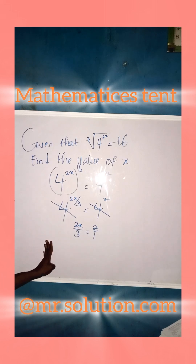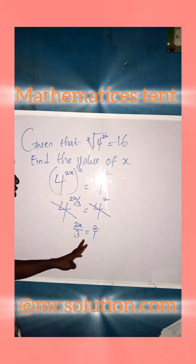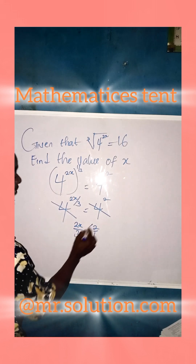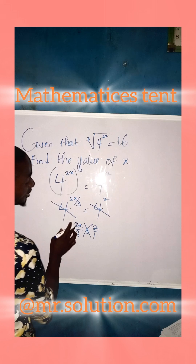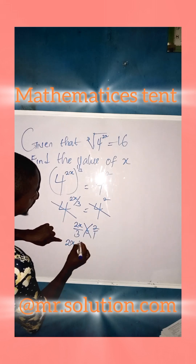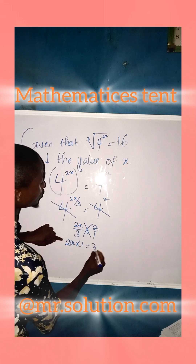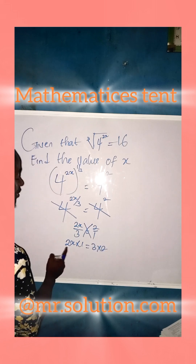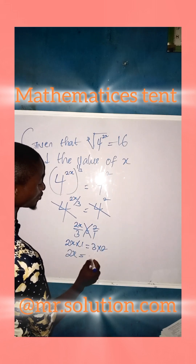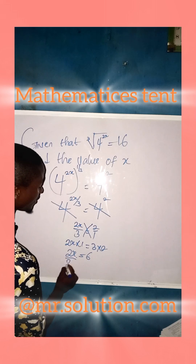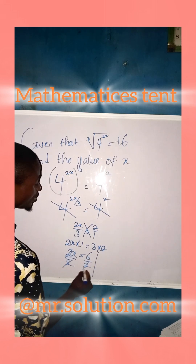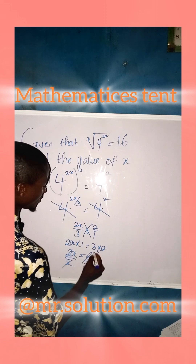Since we have an equation between two fractions, the next step is to cross-multiply. So 2x times 1 equals 3 times 2, giving us 2x equals 6. Dividing both sides by 2, we get x equals 3.